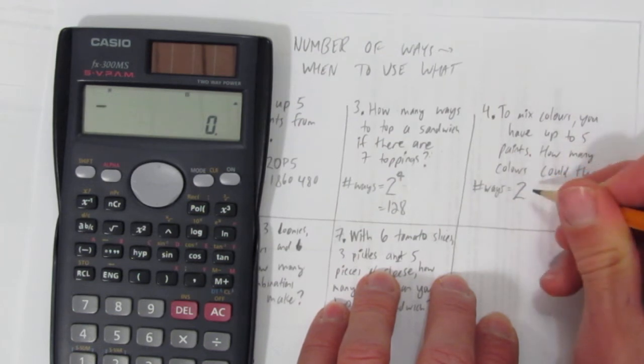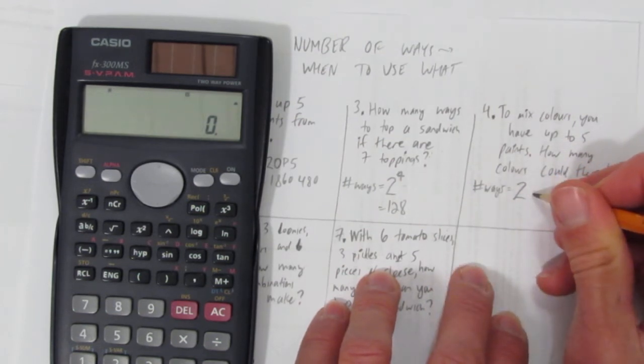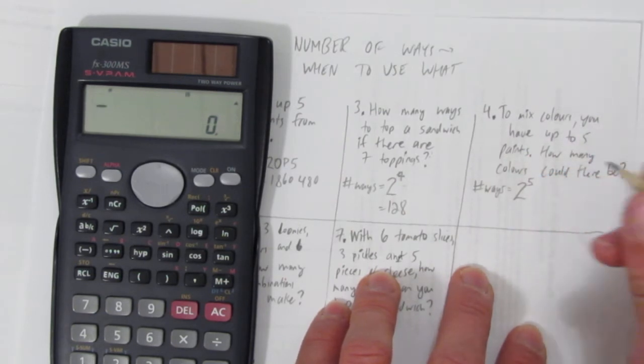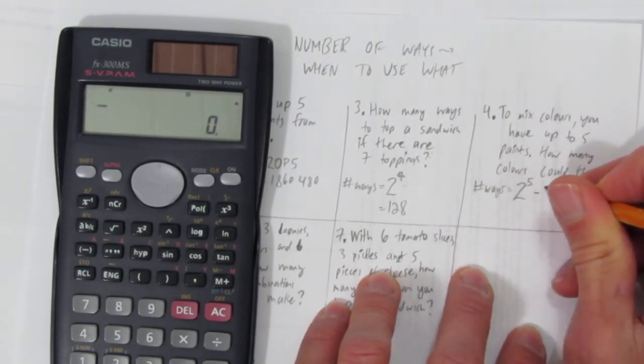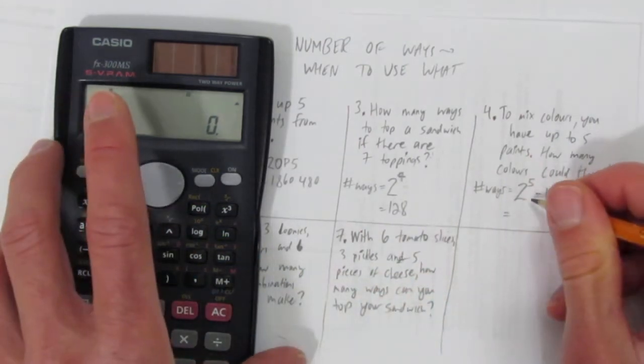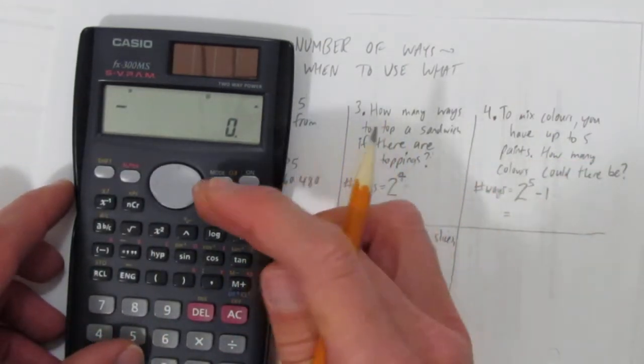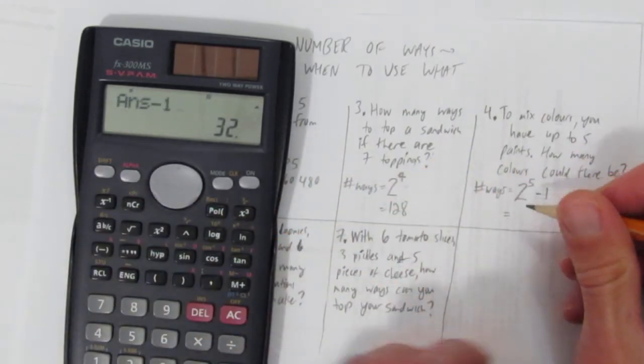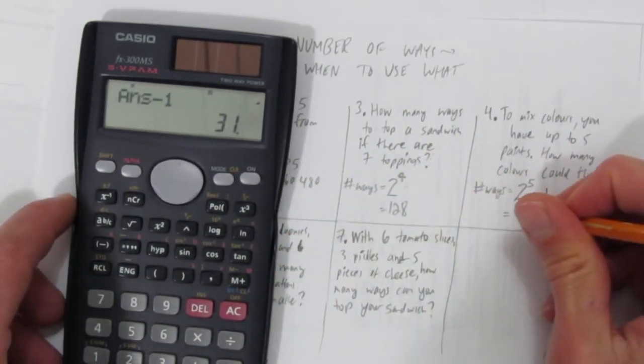So again, for each color, there's two choices. It's like 2×2×2 or just 2^5. Except you can't choose no colors because then you wouldn't have an actual result. What's 2^5? You can do that in your head or calculate it. Take away one, and you get 31.